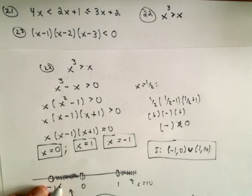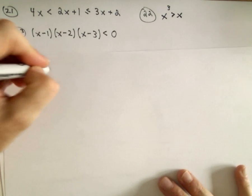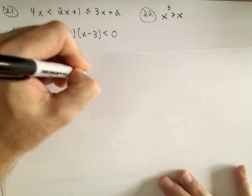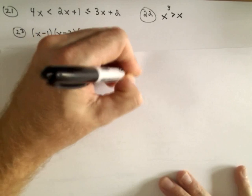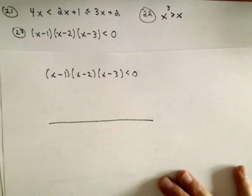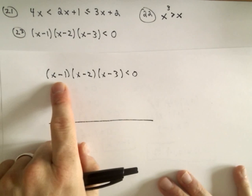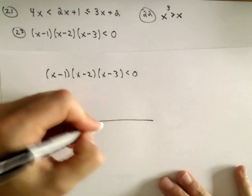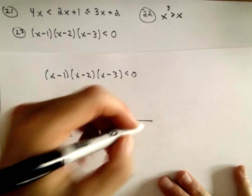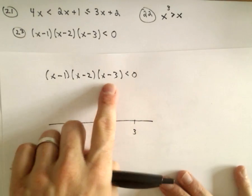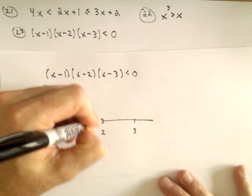Last but not least, number 23. This one's kind of nice — it's already factored for us. We've got (x minus 1)(x minus 2)(x minus 3) less than 0. If you think about the corresponding equation: setting the first factor equal to 0 gives x equals 1, the second factor gives x equals 2, and the third gives x equals 3. Since this is strictly less than, none of those values will work.